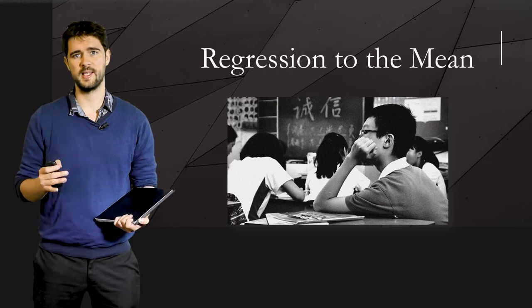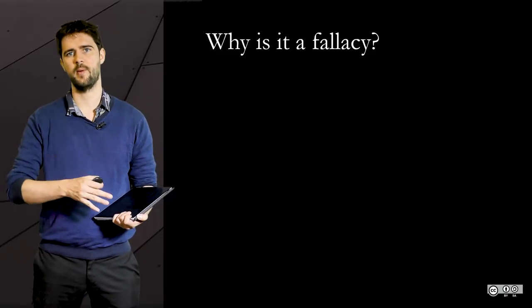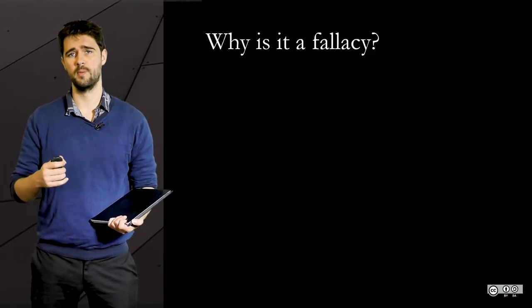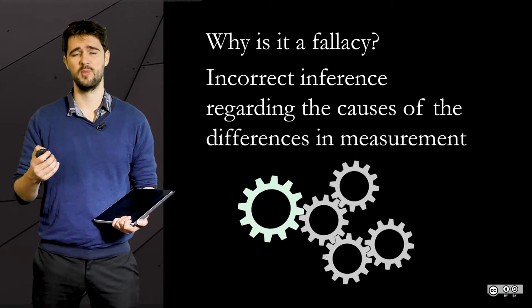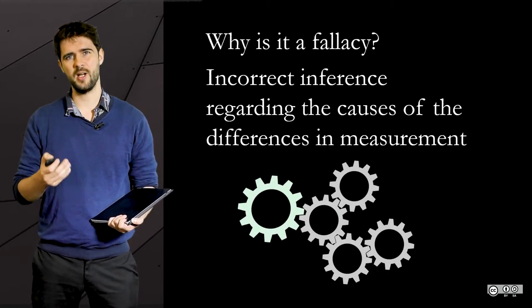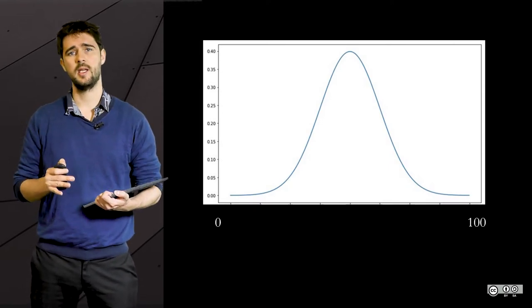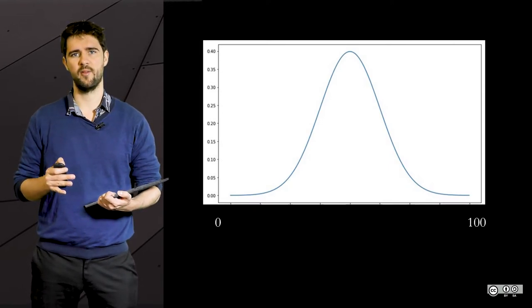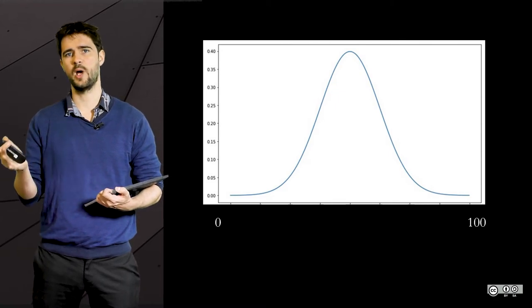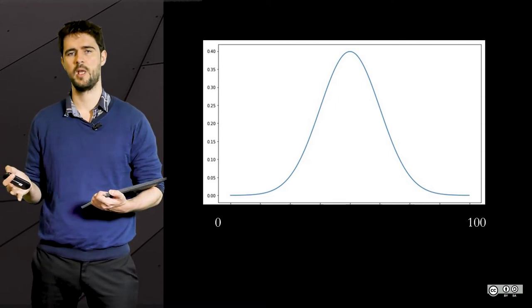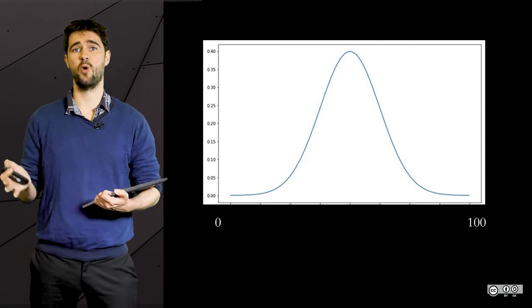To understand why it's a fallacy, you need an intuitive understanding of continuous variables and distributions. A continuous variable can take any value within an interval. In our example, the average grade could be anywhere between 0 and 100. If we compute the average grade for all institutions,